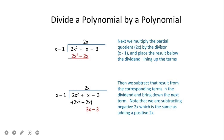We multiply the partial quotient 2x by the divisor (x minus 1) and place the result below the dividend, lining up like terms. Note that we are subtracting negative 2x, which is the same as adding positive 2x. So 2x squared minus 2x squared is zero, and x plus 2x gives 3x. We then bring down negative 3, giving us 3x minus 3 to continue the division.